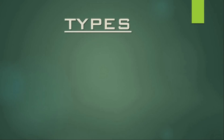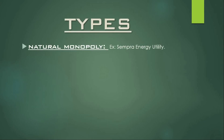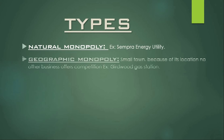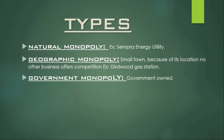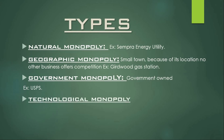We know that there are four types of monopoly market. The first is natural monopoly, where costs are minimized by having a single supplier, like an energy utility. The second is geographic monopoly, like a single gas station in a small town — because of its location, no other business offers competition. The third is government monopoly, like the UPSC exam in India — a government-owned and operated business. The fourth is technological monopoly, where only one technological industry exists.